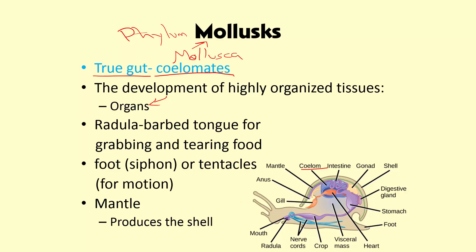Some notable features of molluscs: they have a radula, which is their tongue — a barbed tongue for grabbing and tearing food. They have a foot, a siphon, or tentacles for locomotion. In the snail, we have a foot — the sticky part that goes on the ground — and that is how they move. An octopus has tentacles and moves through jet propulsion. And then we have the mantle, which produces shells in hard-shelled molluscs.